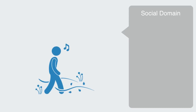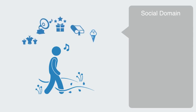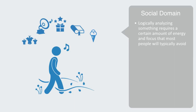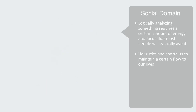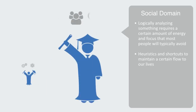Logic is not something that typically comes naturally to human beings. Your average person is driven by a mass of psychological, emotional, and ideological needs and desires. Logically analyzing something requires a certain amount of energy and focus that most people will typically avoid unless specifically required. We use all sorts of heuristics and shortcuts to maintain a certain flow to our lives. In the US, only about 15% of graduates are in the technical STEM areas of math, science, engineering, and technology. In short, most people aren't engineers or computer geeks — they just want to get on with pursuing their interests. The last thing they want to do is read and follow each step in the instruction manual.